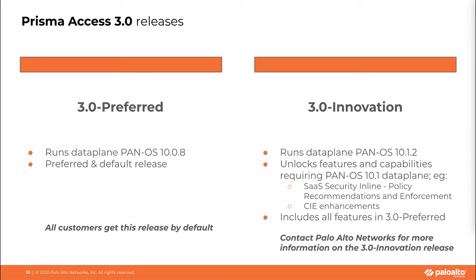Prisma Access 3.0 will be releasing two versions: 3.0 Preferred and 3.0 Innovation, like we had in our 2.0 release. But it will use only a single plugin. The version that plugin activates is dependent on the data plane version of the Prisma Access you are using.